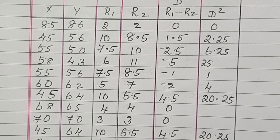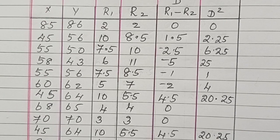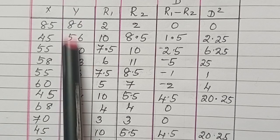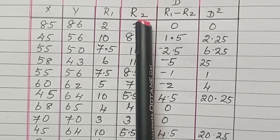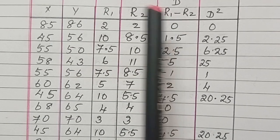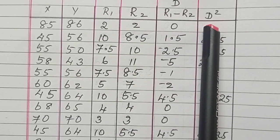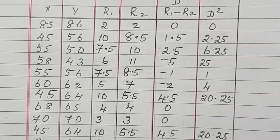I have already drawn all the columns. X variable is given in the question, and Y variable is also given. Next is R1, the rank of X. R2 is rank of Y. Next column is D, that is R1 minus R2. The last column is D square, the square of each D.